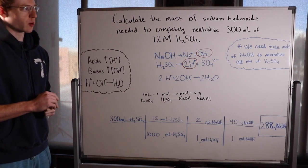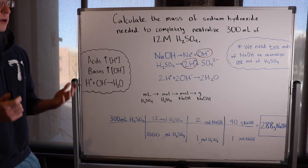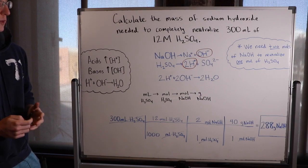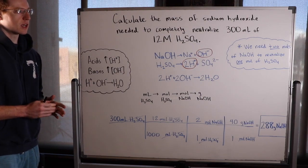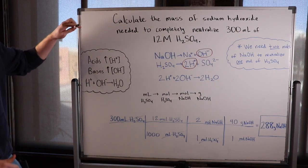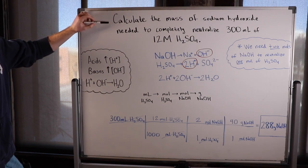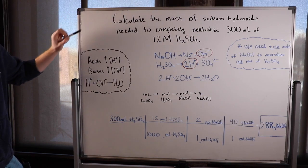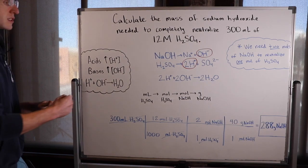Hey guys, in this video we're going to work through a couple problems for which the difficulty is probably on par with your first semester general chemistry course in college. These are going to be acid-base neutralization problems. The first one is asking us to calculate the mass of sodium hydroxide needed to completely neutralize 300 milliliters of 12 molar H2SO4, or sulfuric acid.